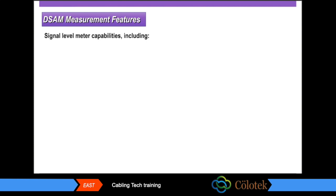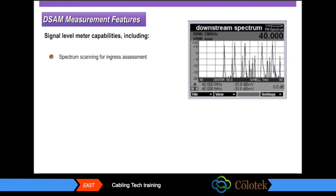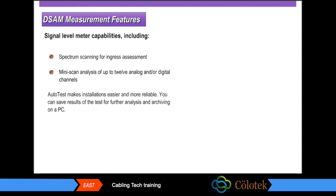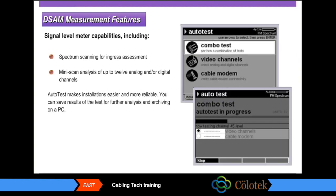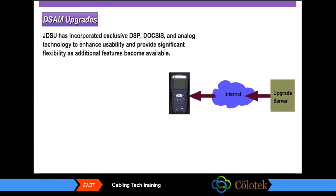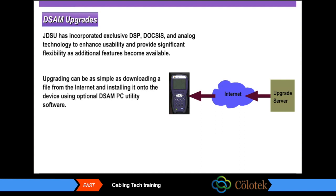The DSAM is equipped with signal level meter capabilities, including spectrum scanning for ingress assessment and mini-scan analysis of up to 12 analog and/or digital channels. The meter's auto-test capability makes installations easier and more reliable. You can save test results for further analysis and archiving on a PC. JDSU has incorporated exclusive DSP, DOCSIS, and analog technology to enhance usability, and upgrading can be as simple as downloading a file from the internet and installing it using optional DSAM PC utility software.